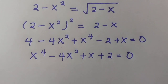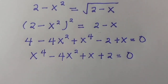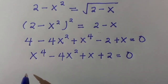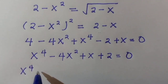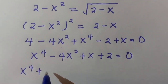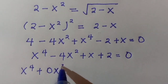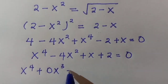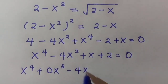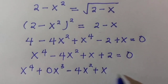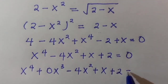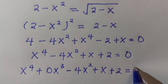There is a quartic equation where a particular term is missing, so let's introduce that term. This can be written as x to the power of 4 plus 0x to the power of 3 minus 4x squared plus x plus 2 equals 0.